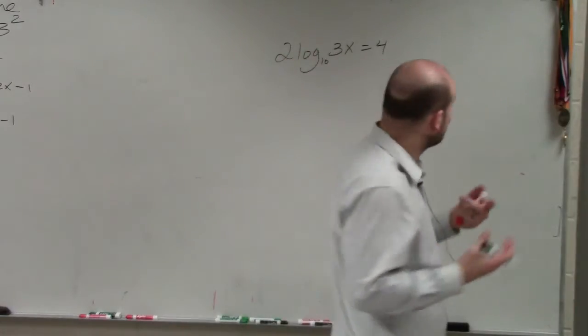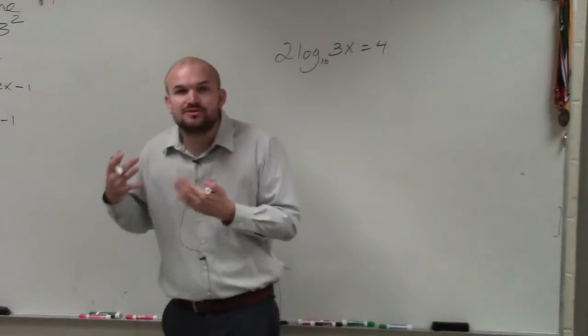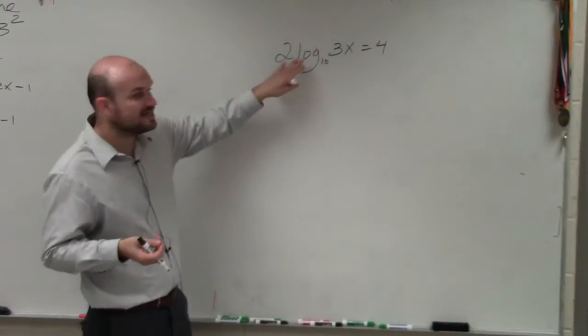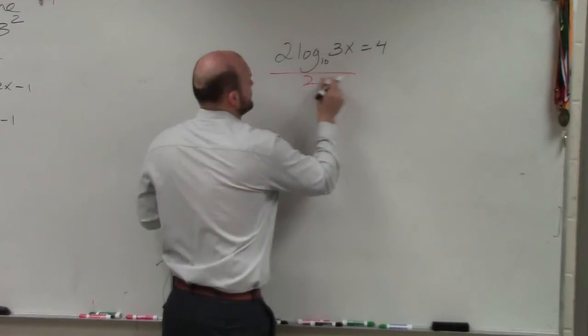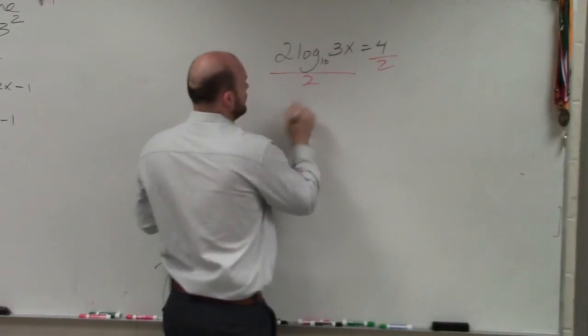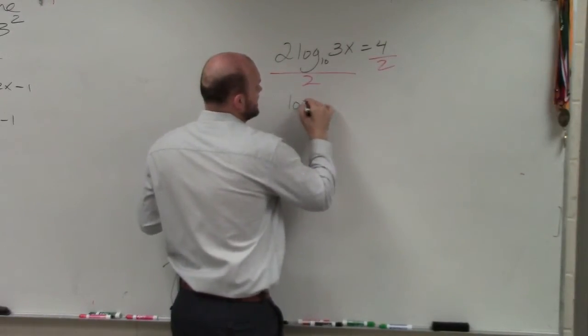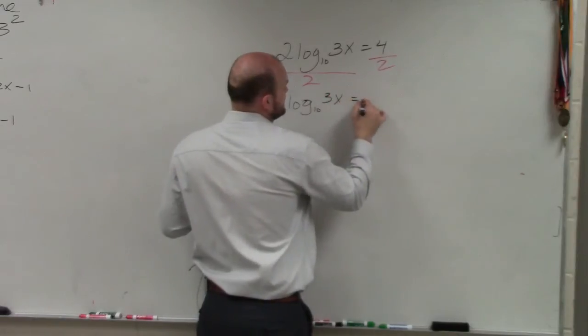The best thing to do with the logarithm is, again, just like we do with the exponential, is to isolate. Isolate the log base 10 of 3x. So to do that, I can divide by 2 on both sides. Therefore, I now have log base 10 of 3x equals 2.